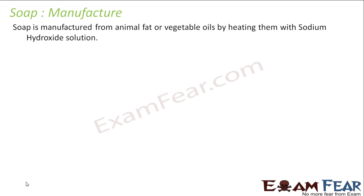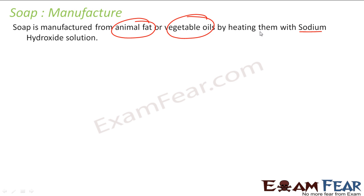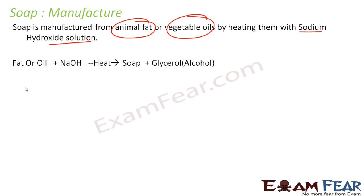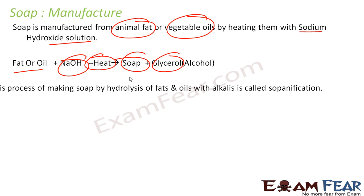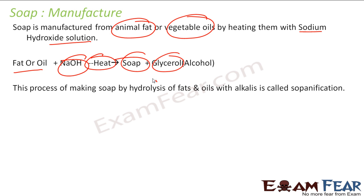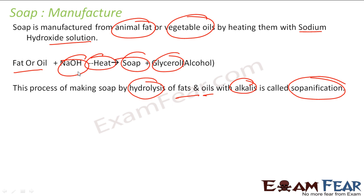How is soap manufactured? It is manufactured from animal fat or vegetable oil by heating them with sodium hydroxide solution. So you take fat or oil, add sodium hydroxide solution, heat it, and you get soap plus glycerol — that's an alcohol. The process of making soap by hydrolysis of fat and oil with alkalis is called saponification.